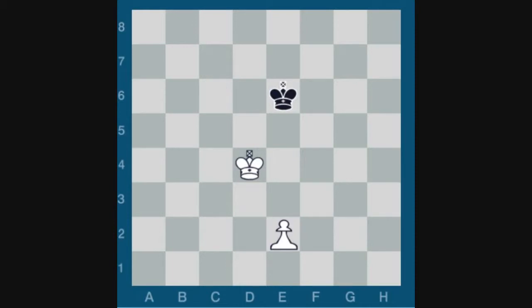Now, what do you play? It would be a critical mistake for White to push his pawn, because if he plays, say, E3, then suddenly the position is drawn again. Black plays King D6, and Black has the opposition. The Kings are lined up one square in between. White can't occupy the new critical squares, which are F5, E5, or D5.